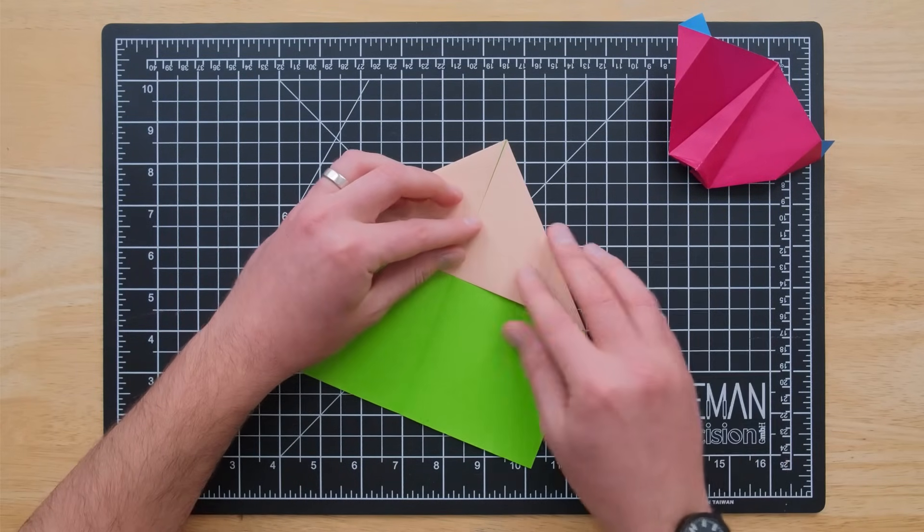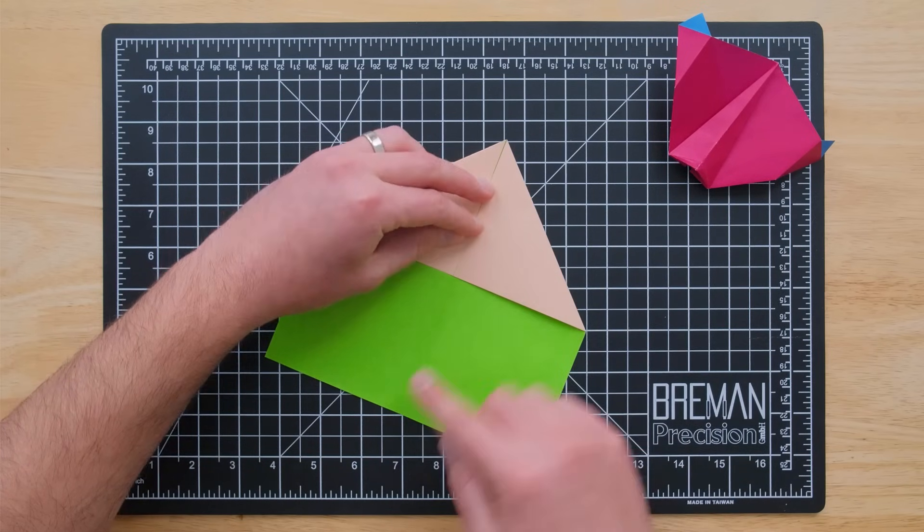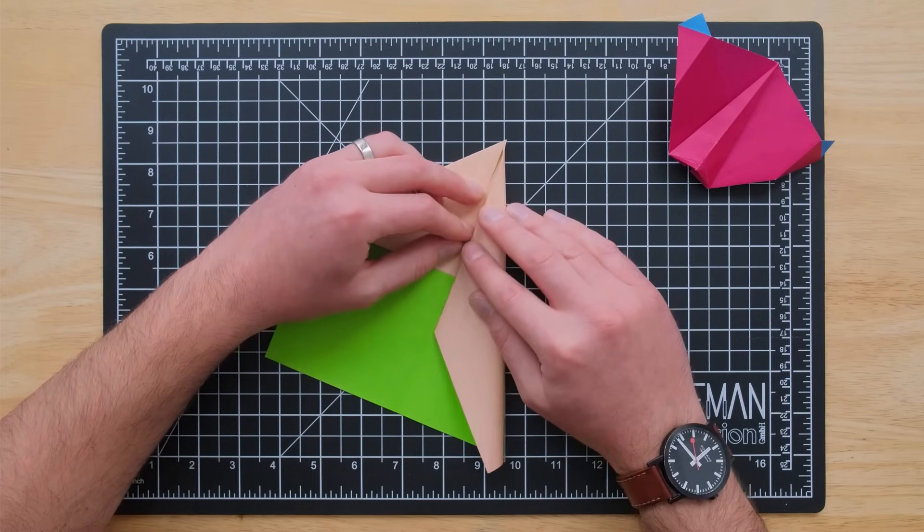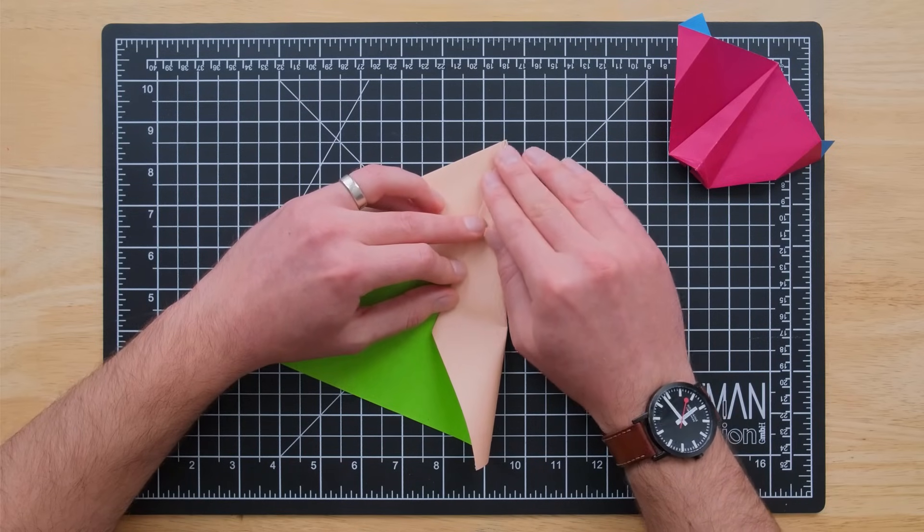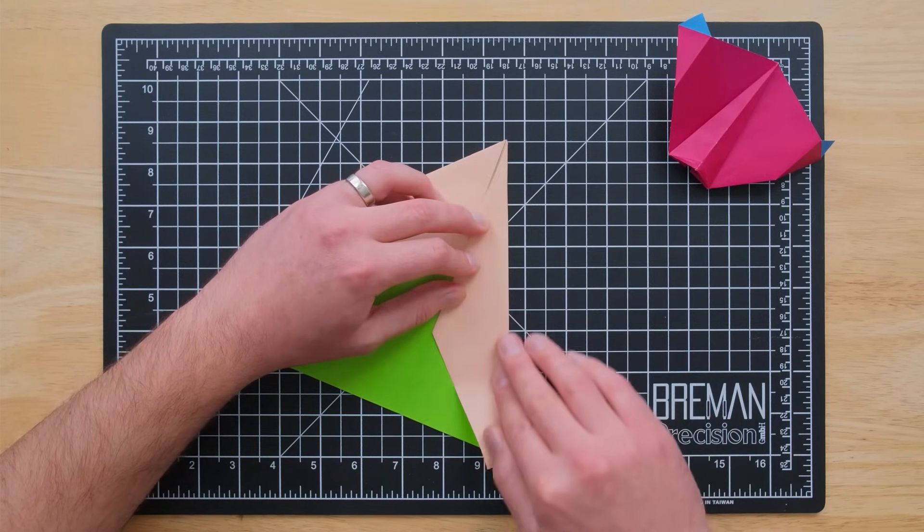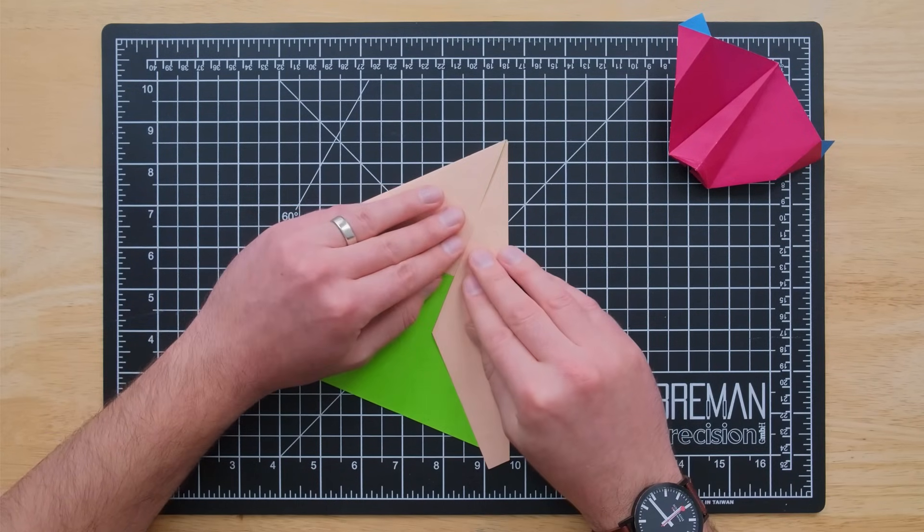And we're going to keep going to fold this edge now into the center line. And I always leave a little bit of a gap on this one just because there are going to be a fair amount of layers of paper going on here. I don't want to stress the paper out too much or rip it.